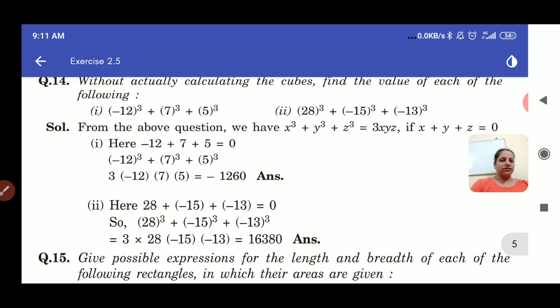So let us take first part. Let us first add all these three minus 12 plus 7 plus 5 and when we see the sum of all these three comes out to be 0. That means we say that sum of minus 12 cube plus 7 cube plus 5 cube will be equals to 3 into minus 12 into 7 into 5 which will come out to be minus 1260.